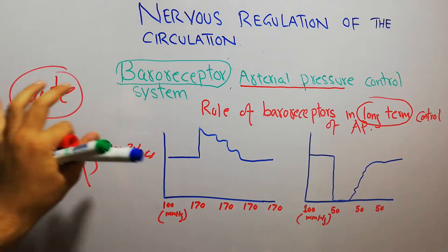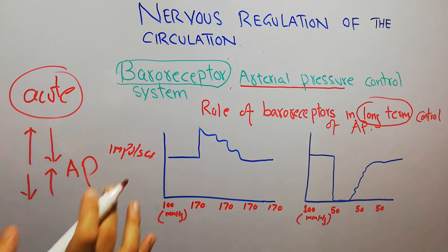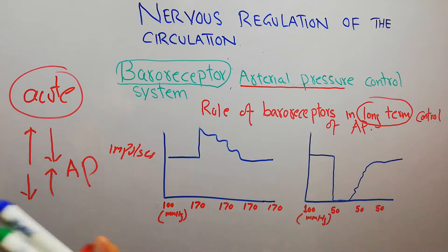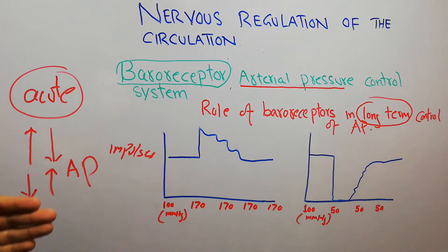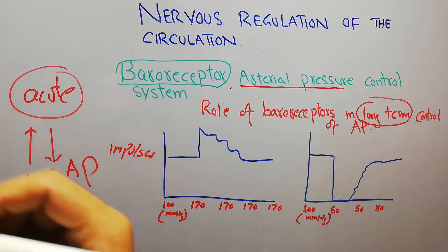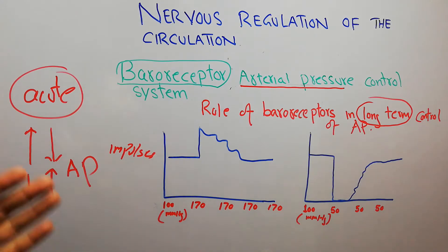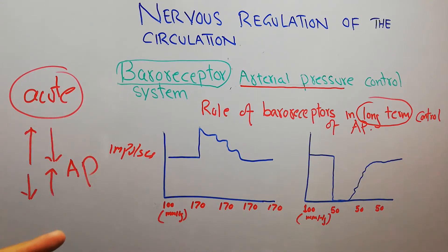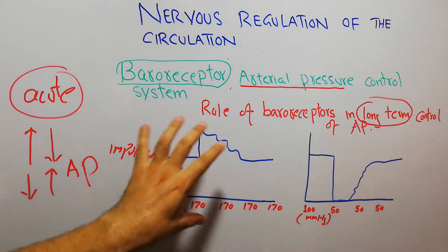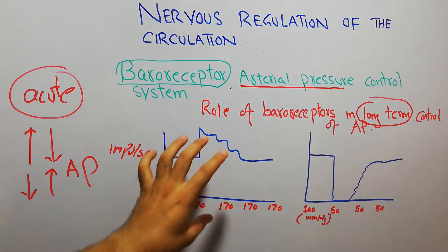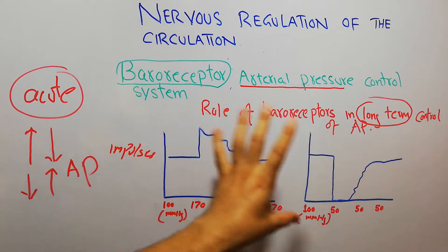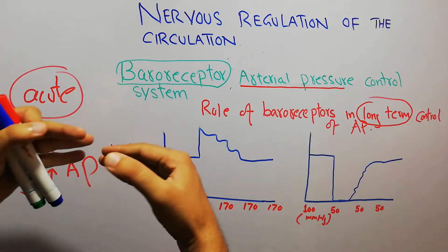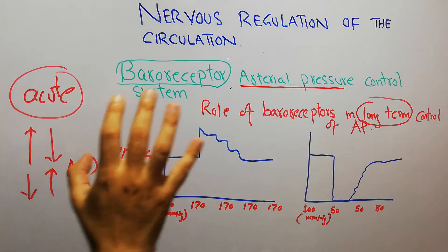That was more important in the control of arterial pressure in acute conditions. We also discussed that when baroreceptors were removed from a dog, the variation in arterial pressure control was much greater compared to a mammal or human with normal baroreceptors. Now in this lecture we are going to see whether the baroreceptors are helpful in long-term control or not. This graph is showing the number of impulses after an increase in arterial pressure. If the arterial pressure increases acutely and then falls, the baroreceptors are functioning.